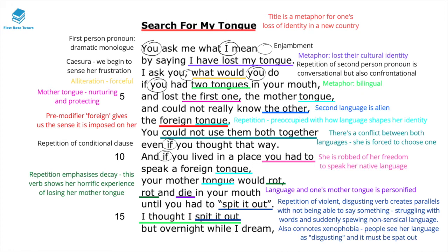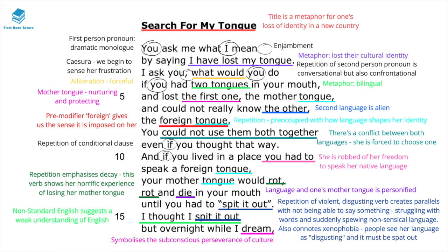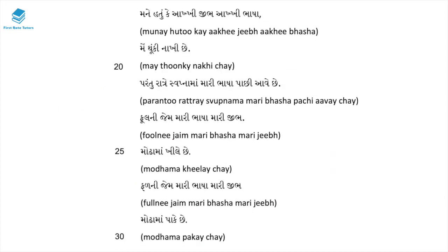She states 'but overnight while I dream' — and prior to this, 'I thought I spit it out.' The use of 'I thought I spit it out' is an interesting use of non-standard English, suggesting the speaker may still have a weak understanding of English. The reference to dreaming then symbolizes a subconscious perseverance of her culture and her original mother tongue.